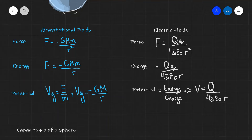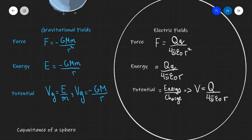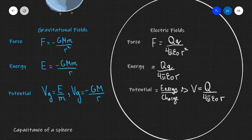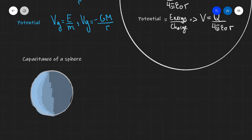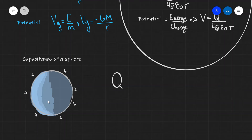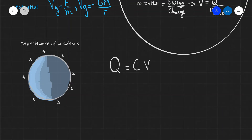Those are the three equations that allow us to solve essentially any problem within electric force, electrical potential energy, or electric potential. Now we're going to apply our equation for the electric potential to determine an equation for the capacitance of a sphere. Let's imagine a small charged sphere with charge Q — this could be the sphere at the top of a Van de Graaff generator. As we give it charge, this sphere acts as a capacitor because it stores electrical charge. We can apply Q = CV and find the capacitance by rearranging for C.